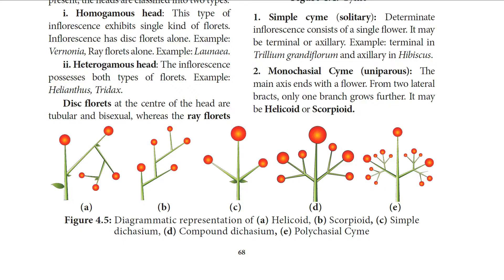Monochasial cyme is classified into helicoid and scorpioid. The main axis ends in a flower, and from the two lateral bracts only one branch grows further. If it is helicoid, the axis develops only on one side, forming a coiled structure — from the axil of the main flower another pedicellate flower is produced, then another from that, forming a spiral on one side. Example: Hamelia and potato.